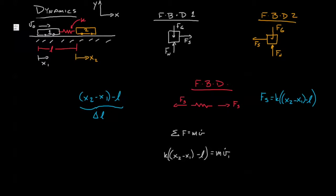Next, we'll do the sum of the forces equals mv dot for free body diagram two. Now this force is in the negative direction, so we're going to have negative K(x2 minus x1 minus L) equals mv2 dot.